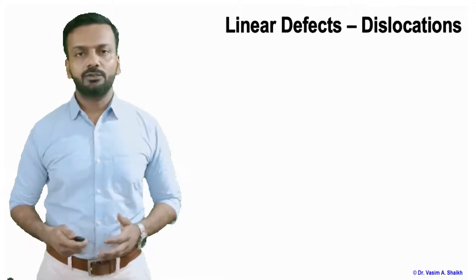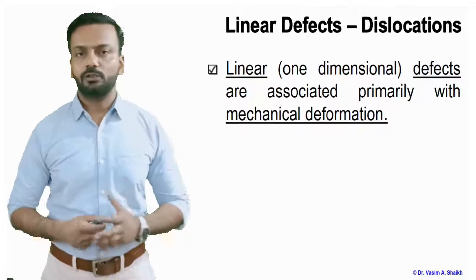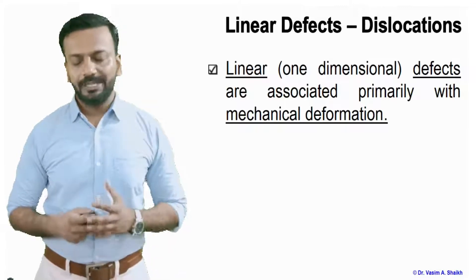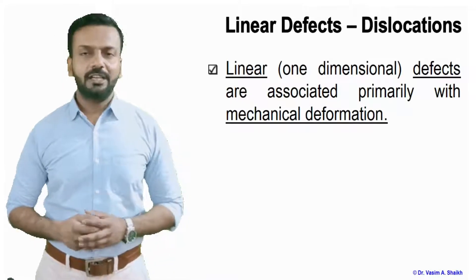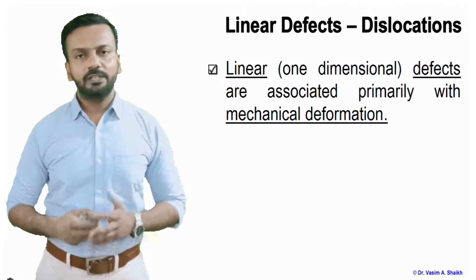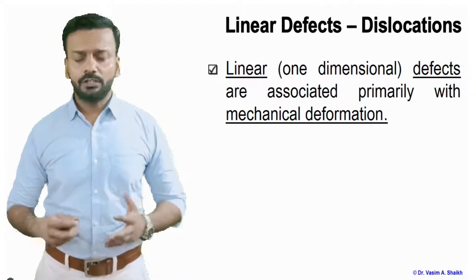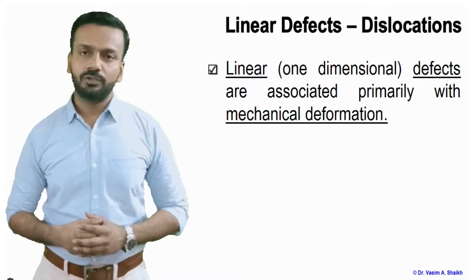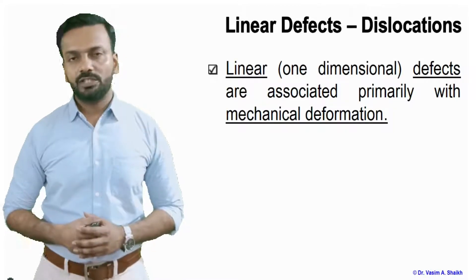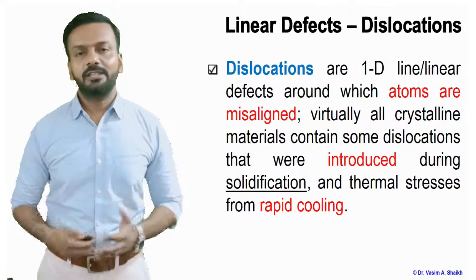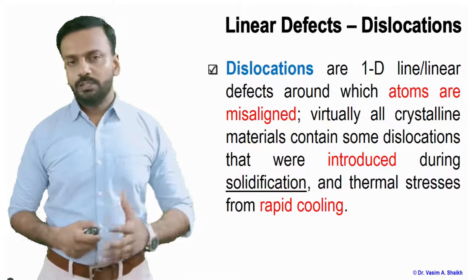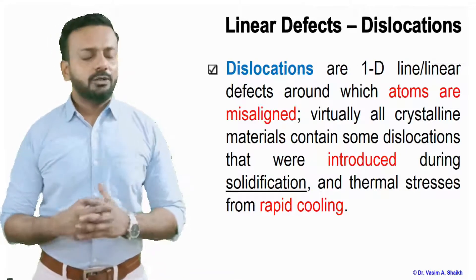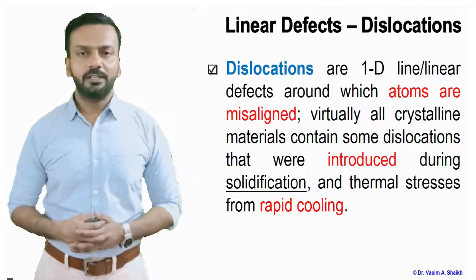Linear defects or dislocations — let us first see what they are. Linear basically means they are one-dimensional defects and they are associated mainly with mechanical deformation. This means that deformation is mainly done with the help of dislocations which are present in solids. Without dislocation we cannot have deformation. During the process of solidification, when we are solidifying the material from the liquid to the solid state, these dislocations are bound to happen in the material — you can't avoid them.